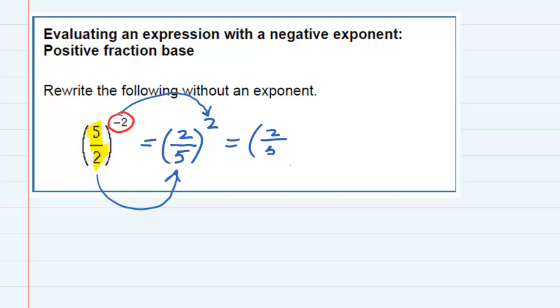2 fifths times 2 fifths. So multiplying the fractions across the top gives us 4 and multiplying across the bottom gives us 25.